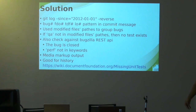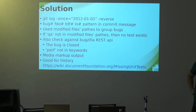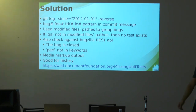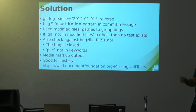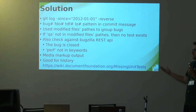If no QA path is found, we assume there is no unit test for the fix. We then go to Bugzilla and check via the REST API — for example, whether the bug is closed or fixed. We also exclude issues that have the keyword 'perf' meaning performance, since testing performance issues is difficult. Once we have the list of fixes without unit tests, we output it using wiki markup.